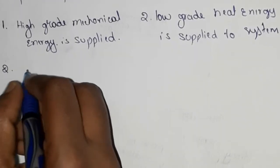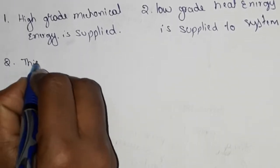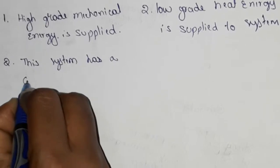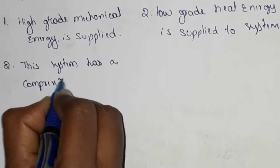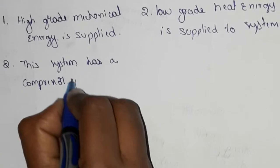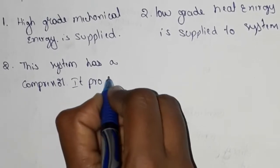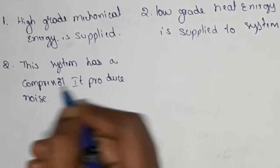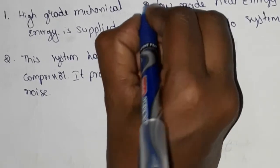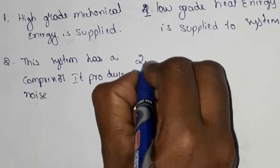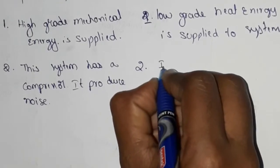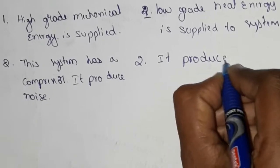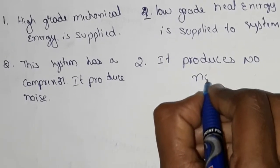Second point: this system — vapor compression — has a compressor, so it produces noise. In contrast, the vapor absorption system produces no noise.